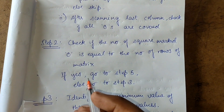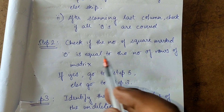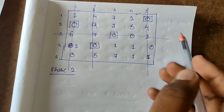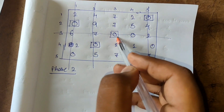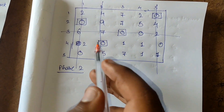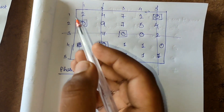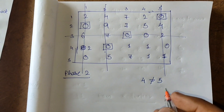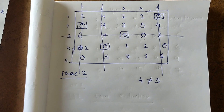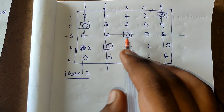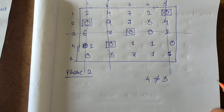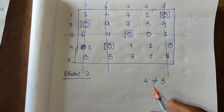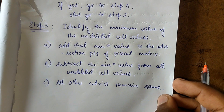Step two of phase two: check if the number of square-marked zeros equals the number of rows. We count the squares: one, two, three, four — that's four squares. The matrix has five rows, and four does not equal five. So we do not reach the optimal solution yet and must proceed to step three. If the counts were equal we would go to step five, which means the optimal solution is reached.